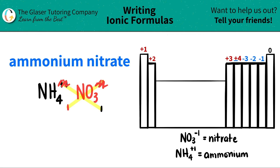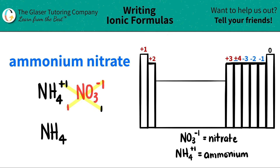When you do this crisscrossing, don't worry about the charges anymore — just focus on the subscripts. Now I'm ready to write the formula. I only need one ammonium, and if you need one polyatomic ion you do not need parentheses, so I'm just going to write NH4 without a subscript of 1. The same goes for nitrate — I need one, so I just write NO3.